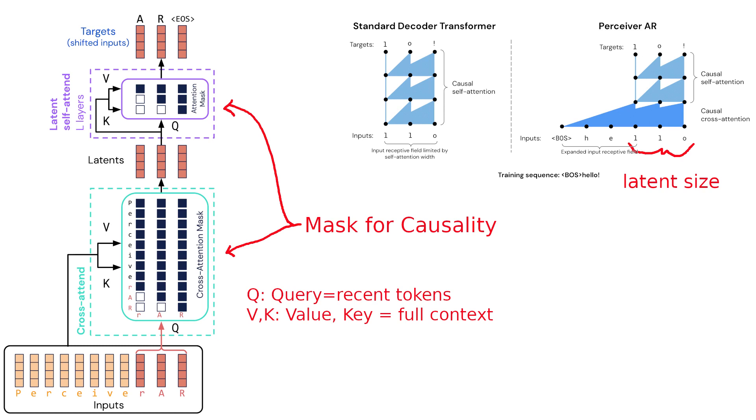So perceiver models are a variant of transformers. They can handle very large input sizes. And that's why they can enter into domains that previously we would have thought transformers can't handle because of the limited context size. That's why it can work on music and even work on the raw waveform of the music.